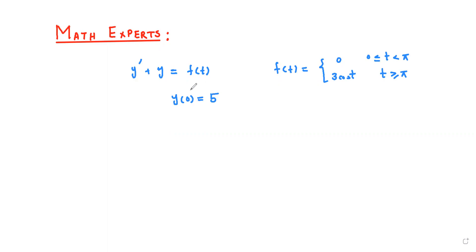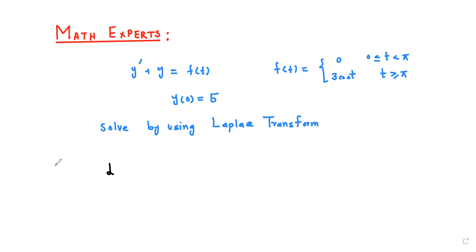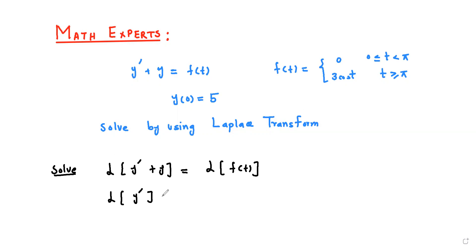We want to solve this by using the Laplace transform. We apply Laplace transform of y prime plus y, equal to Laplace transform of f of t. By using the linear property, we can apply Laplace transform to both sides. Now f of t is this piecewise continuous function.